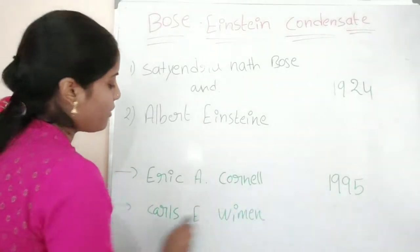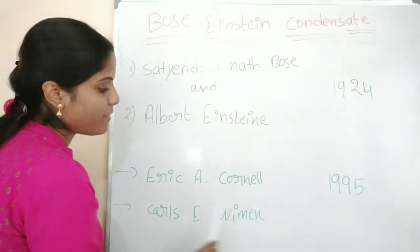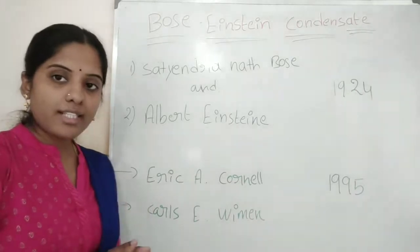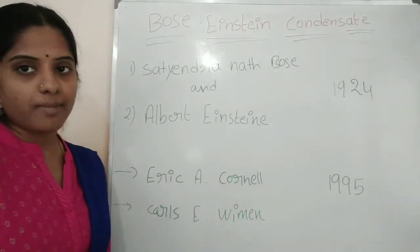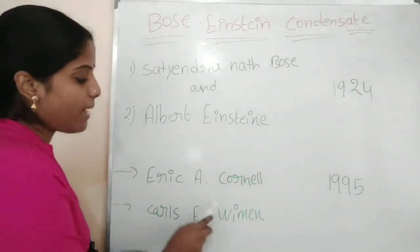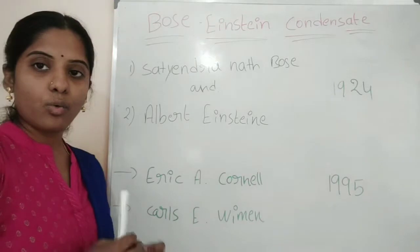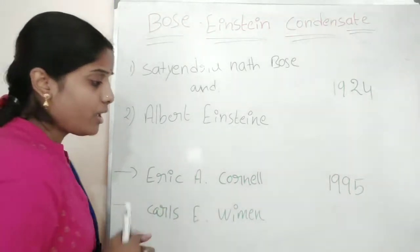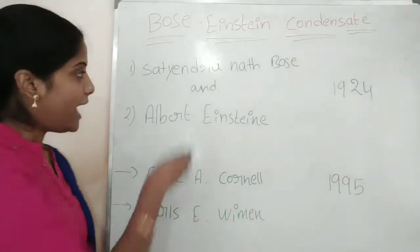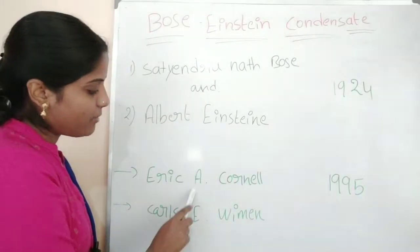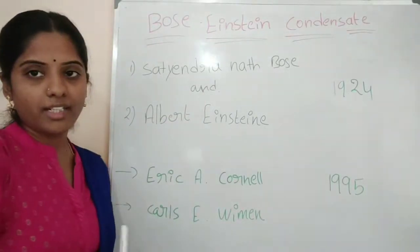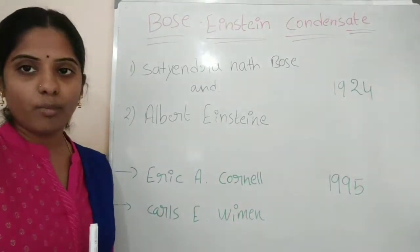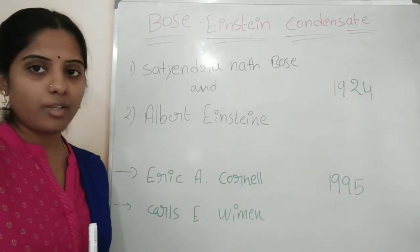In 1995, Eric Cornell and Carl Wieman, using laser cooling technology on a gas containing 2000 rubidium atoms, were able to prove this experimentally. Therefore, they received the Nobel Prize in the year 2001.